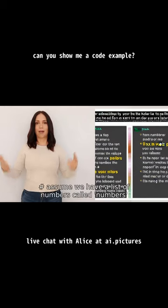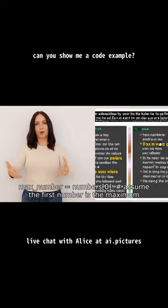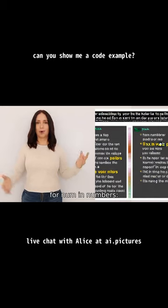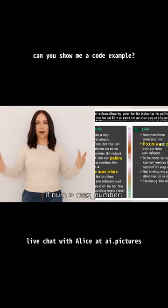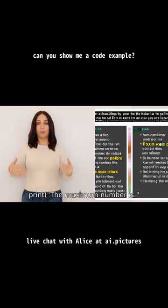Here's the code: assume we have a list of numbers called 'numbers'. Set max_number equal to numbers[0], assuming the first number is the maximum. Then, for each num in numbers, if num is greater than max_number, set max_number equal to num. Finally, print the maximum number, which is max_number.